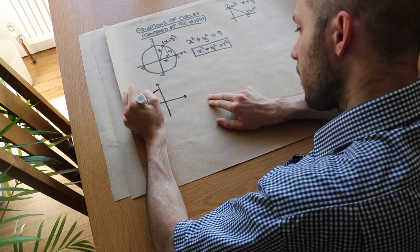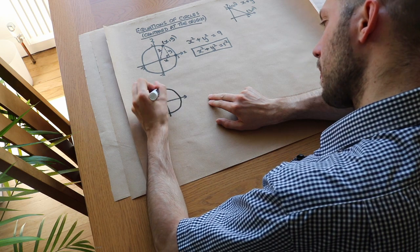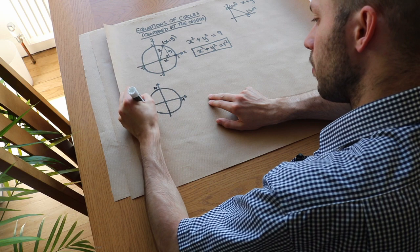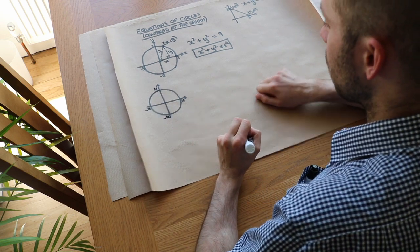I've got this circle here, and it goes through 4, 4, minus 4, minus 4. What's the equation of this circle?